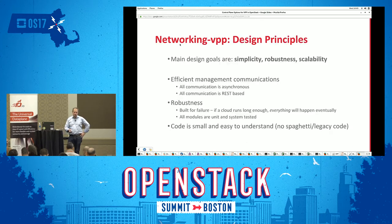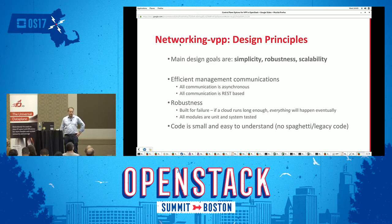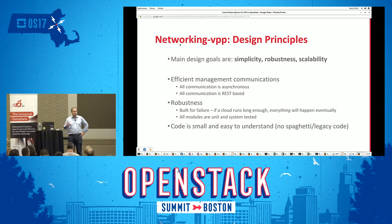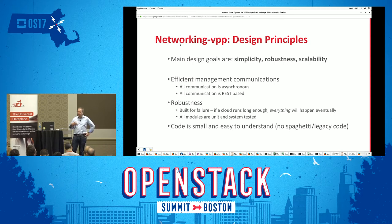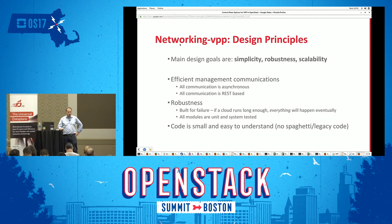The main principles were simplicity, robustness, and scalability. By simplicity we mean simple code and simple architecture — only a few hundreds of lines of Python, with no legacy things, something simple to debug, simple to write, and easy to contribute to. In terms of communications, everything uses REST and JSON. We had some experience with RPC and slow models that don't scale, so we decided to use etcd, a very popular key-value store widely used in the container space, which provides nice features like clustering.